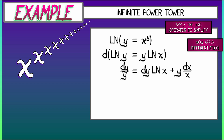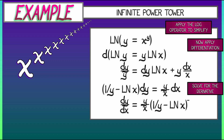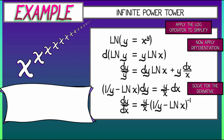We move all the dy terms to the left side and factor out a dy. What's left over is the quantity 1 over y minus log of x, and on the right, y times dx. Solving for the derivative gives dy/dx equals y over x times the quantity 1 over y minus log of x, all inverted. Multiplying through by y to clear the 1 over y gives a final answer of y squared divided by x times the quantity 1 minus log of x. That is the derivative of the infinite power tower.